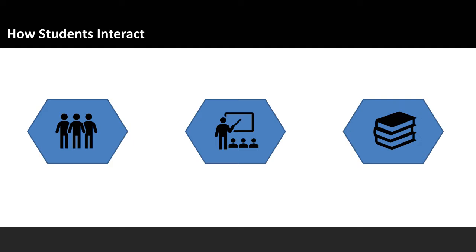My fourth and last quick tip: consider asking students for input on how they want to be addressed. This could probably make the biggest difference in your course atmosphere. Consider asking your students to record a quick introductory video where they can include their preferred name — sometimes their preferred name is not what's on your course roster or their birth certificate. How do I pronounce it? And give them the option to include their pronouns if they would like.